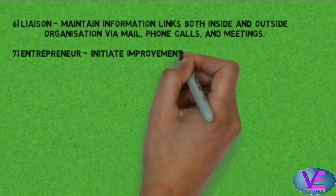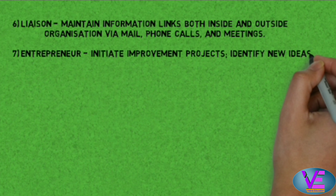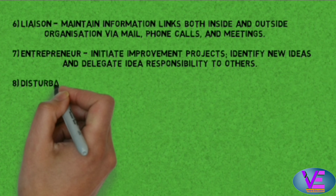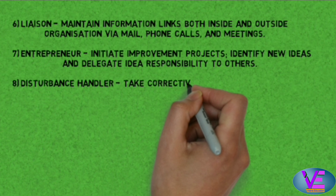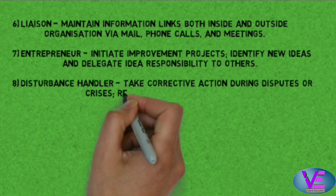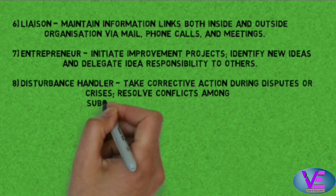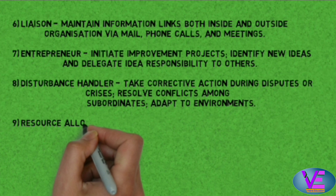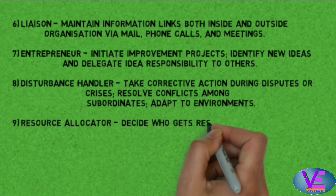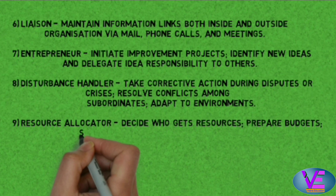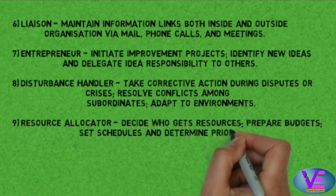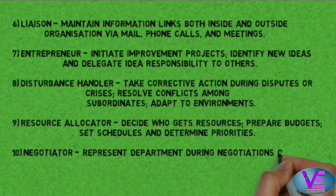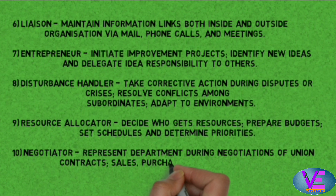Entrepreneur: initiate improvement projects, identify new ideas, and delegate idea responsibility to others. Disturbance Handler: take corrective action during disputes or crisis, resolve conflicts among subordinates, and adapt to environments. Resource Allocator: decide who gets resources, prepare budgets, set schedules, and determine priorities. Negotiator: represents the department during negotiations of union contracts, sales, and purchases.